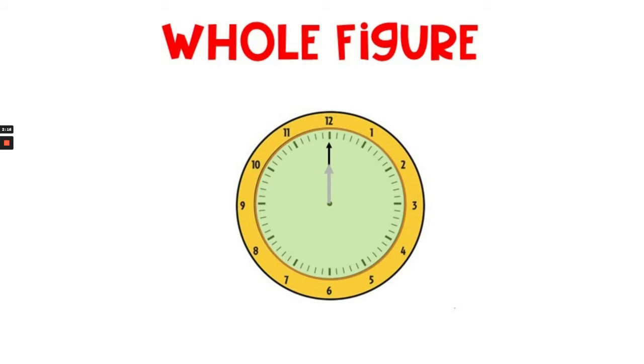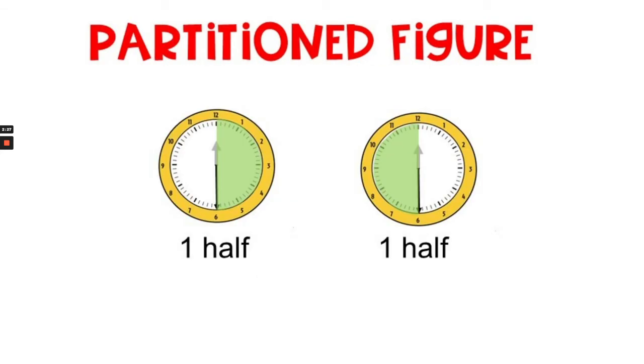Here's a whole figure. The clock represents one whole hour. If the minute hand is half past, it would be right in the middle pointing down at the six, so each clock is showing one half hour.